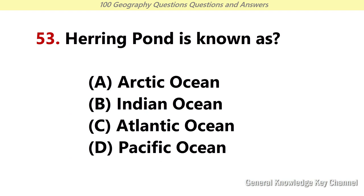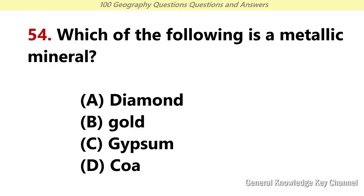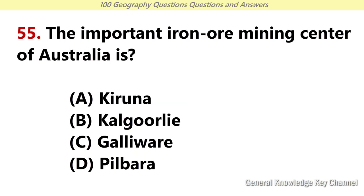Herring pond is known as? Answer C: Atlantic Ocean. Which of the following is a metallic mineral? Answer B: Gold. The important iron ore mining center of Australia is? Answer D: Pilbara.